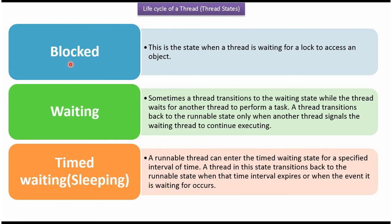In the Blocked state, the thread is waiting for a lock to access an object. Sometimes a thread transitions to the Waiting state while it waits for another thread to perform a task. A thread transitions back to the Runnable state only when another thread signals the waiting thread to continue executing.